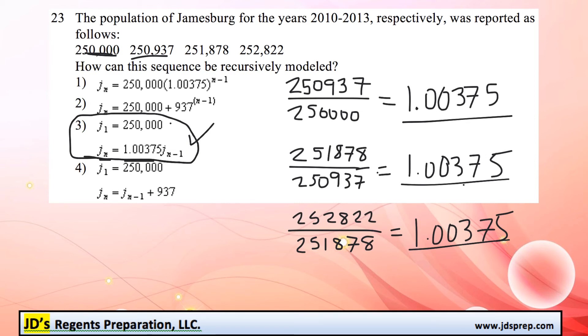Looking at the other ones, option number four would only be true going from the first to second iteration of adding 937, but clearly they're not adding 937 each time.